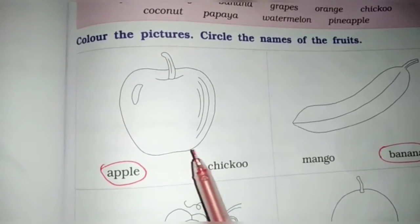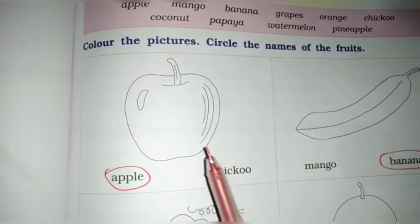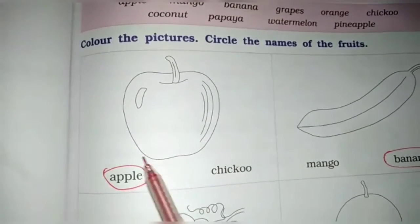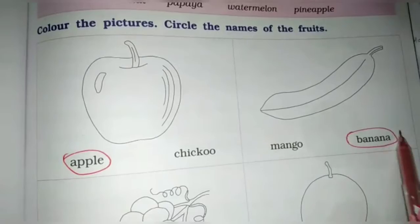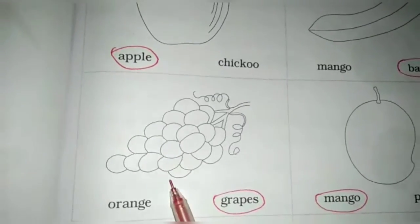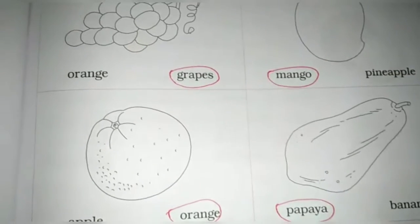Then circle the pictures. Circle the names of fruits. This is apple. So circle on the apple. This is banana. So circle on the banana. Grapes, Mango, Orange and Papaya.